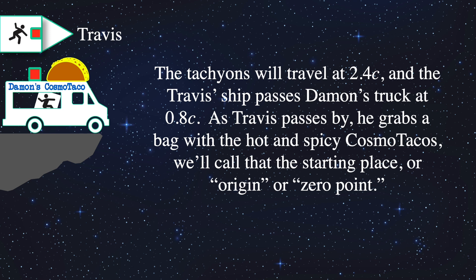Travis's ship will pass by Damon's truck at 0.8, or rather 80% the speed of light. We'll call the point that Travis passes by the truck the zero point, or point of origin. He's going to grab the bag of hot tacos and speed along his way. Now it's very important to note that these tacos are resilient against instantaneous changes in velocity. It's also important to note that they can see each other in a telescope at any moment they choose, and the interior lighting allows anyone to see what's going on. This information about what's going on inside either the taco truck or the rocket goes out from each of them at the speed of light and exposes their actions to the universe.